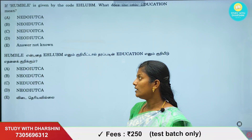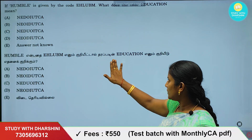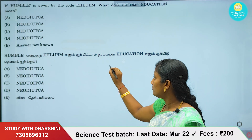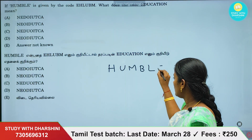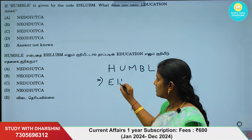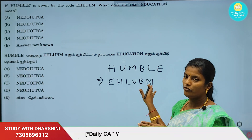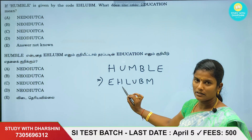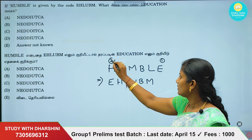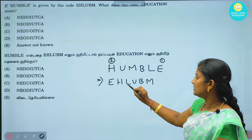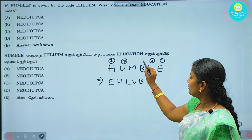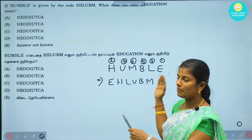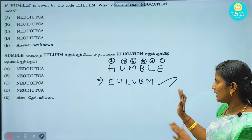So you have a question. Let's see how HUMBLE is coded: E-H-L-U-B-M. The E is the last letter in the first part; this is the first letter in the second. So this is 1, this is 2. The letter on the back side is in the third position. This is 3, this is 4, this is 5, this is 6. So if you use this pattern: 1, 2, 3, 4, 5, 6.